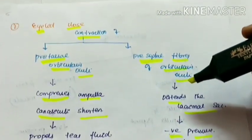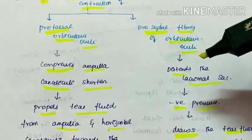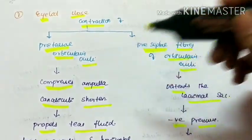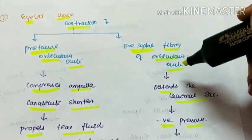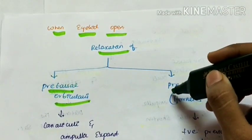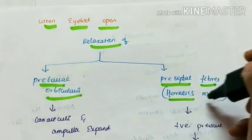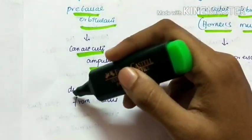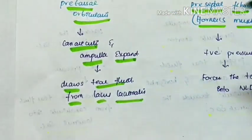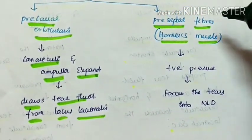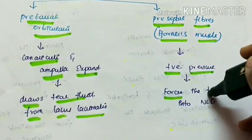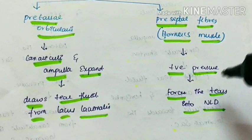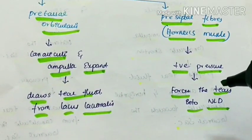When we open the eyelids, there is relaxation of the pretarsal orbicularis oculi muscle and also relaxation of the preseptal fibers, the Horner's muscle. The pretarsal orbicularis muscle relaxes, causing the canaliculi and ampulla to expand, drawing tear fluid from the lacus lacrimalis. The preseptal fibers also relax, generating positive pressure, which forces the tears into the nasolacrimal duct. These are the mechanisms of tear flow during both closing and opening of the eyelids.